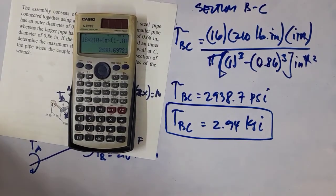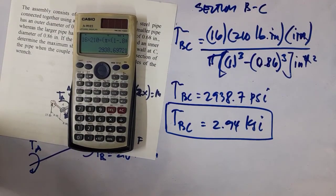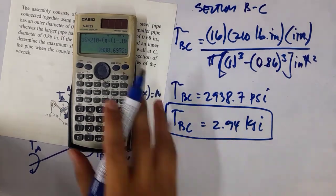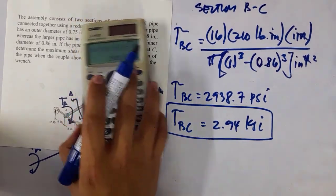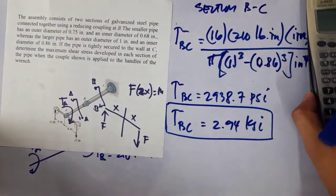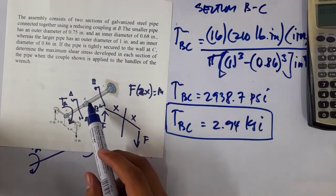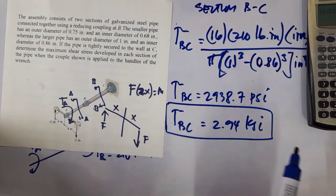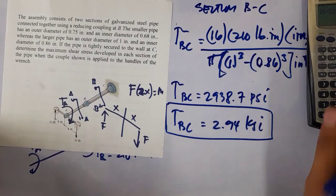So that's your torsional shearing stress for the larger pipe in section B to C. That's it for this problem.